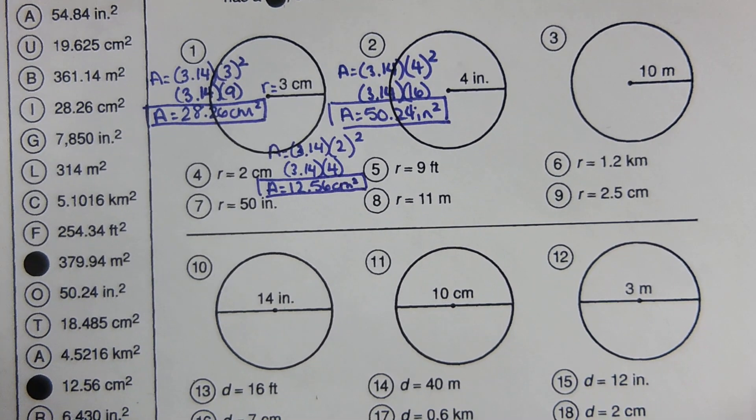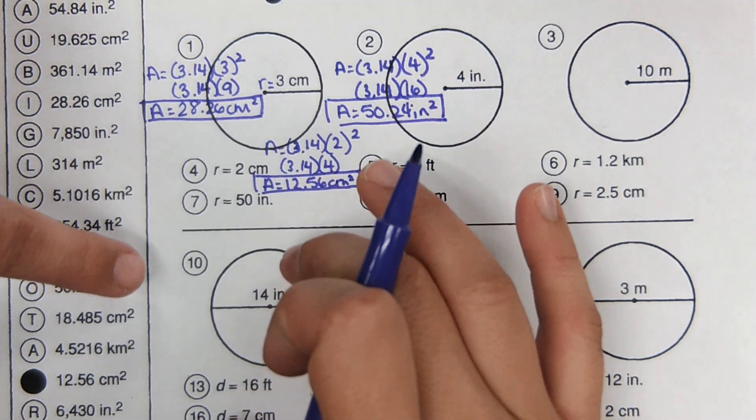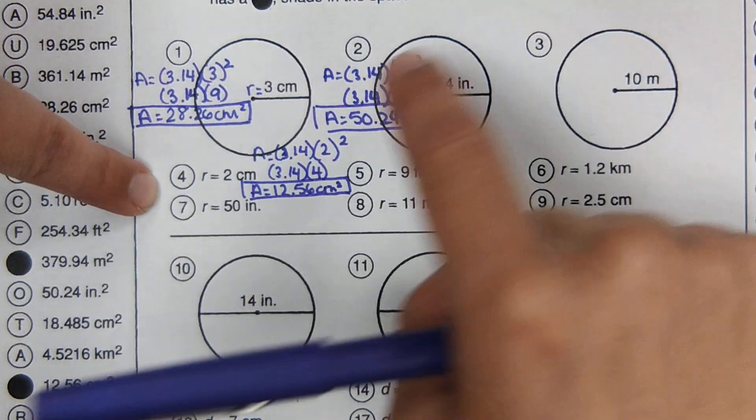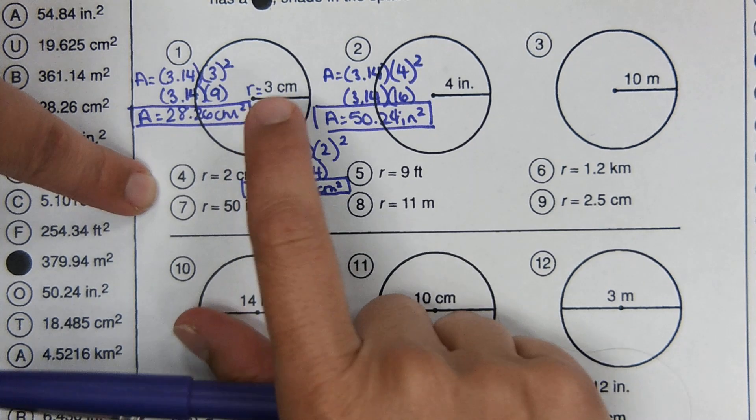Okay, and then from there, I'm going to skip down to the bottom portion. So in this top portion, it gives you the radius. So when you're doing this, you can just plug that number right into the equation like we did.